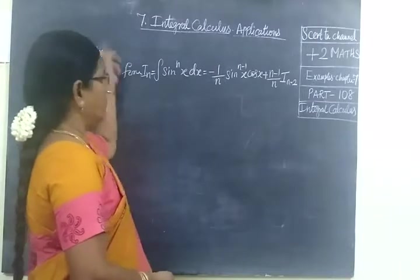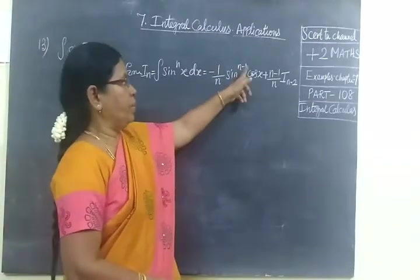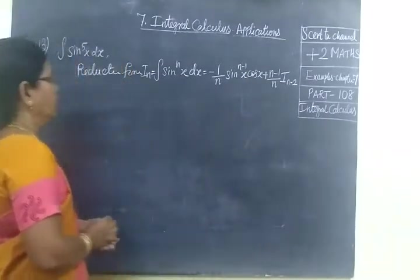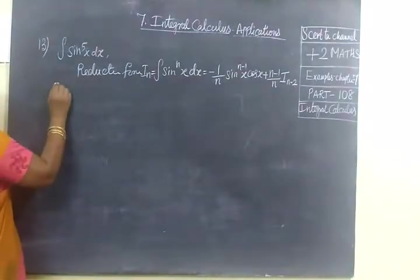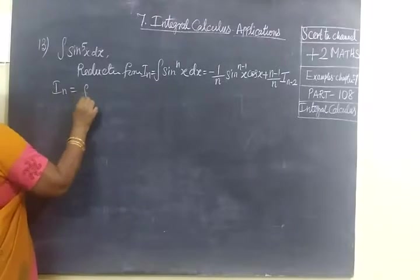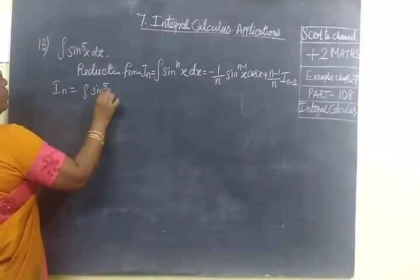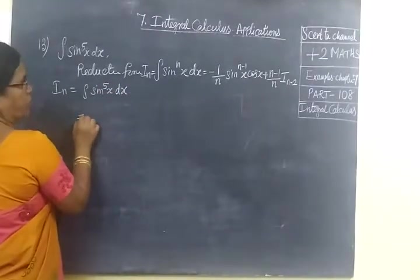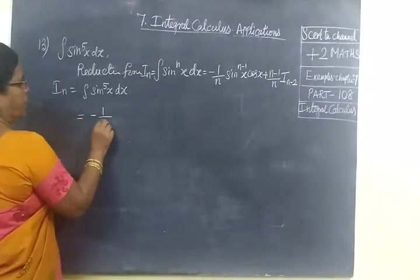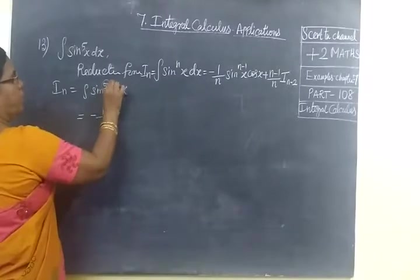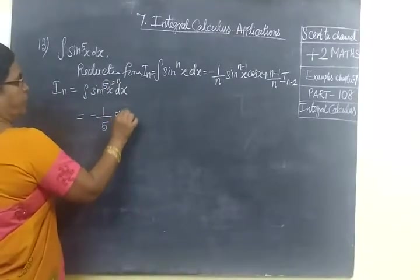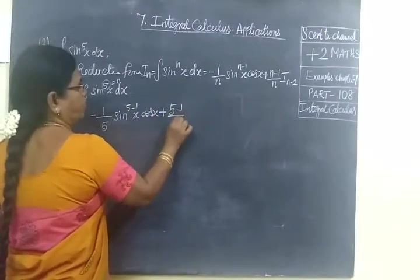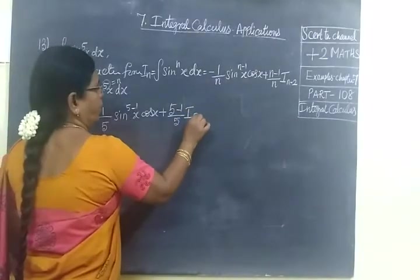Till you get the last step, we are proceeding. So in this problem, let I_n equal to integral sine power 5x dx. Now by applying reduction formula, this is equal to minus 1 by n, where n equals 5. Sin power 5 minus 1 x cos x plus 5 minus 1 by 5, I_{5-2}.